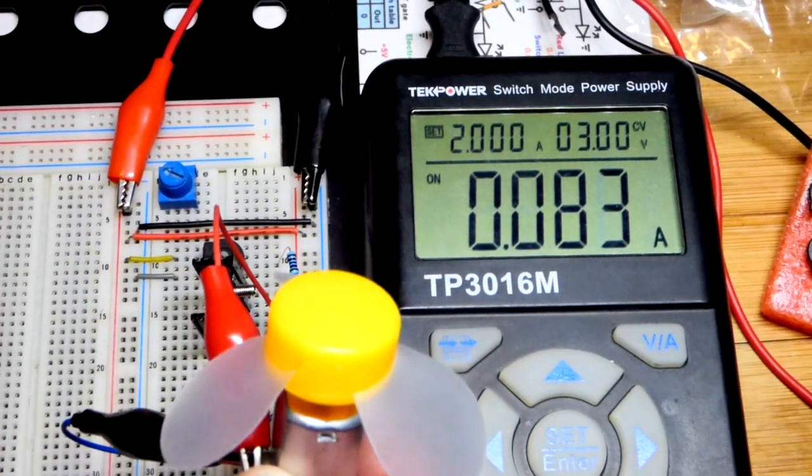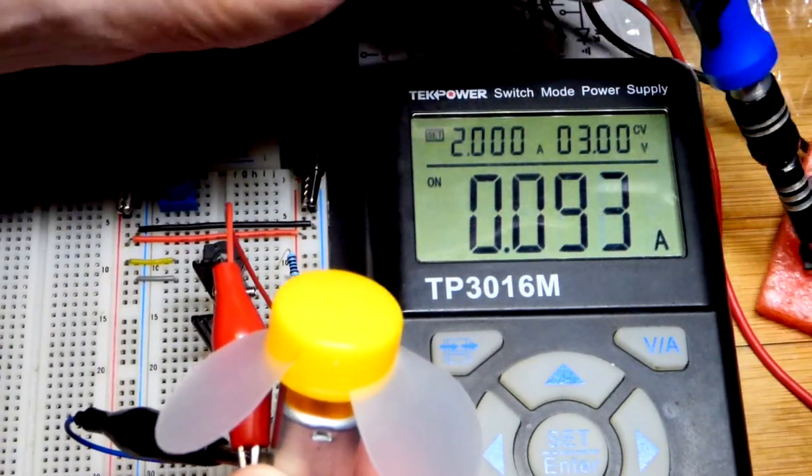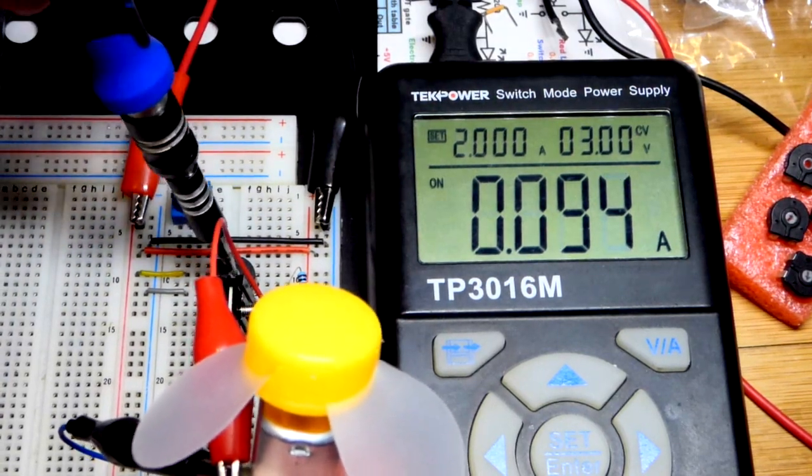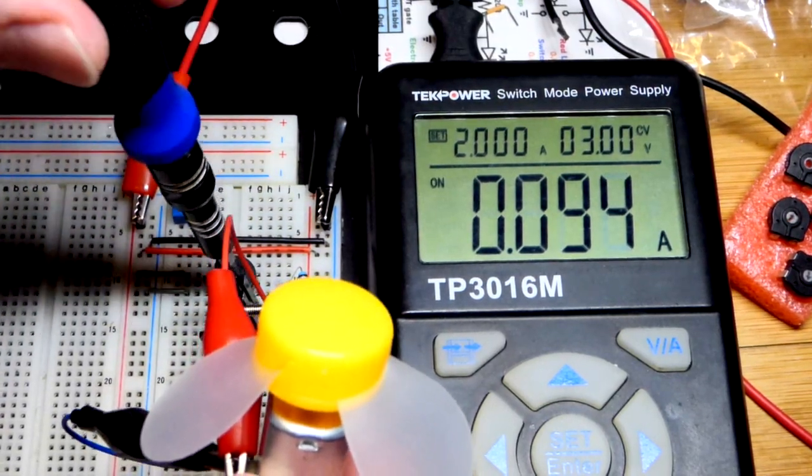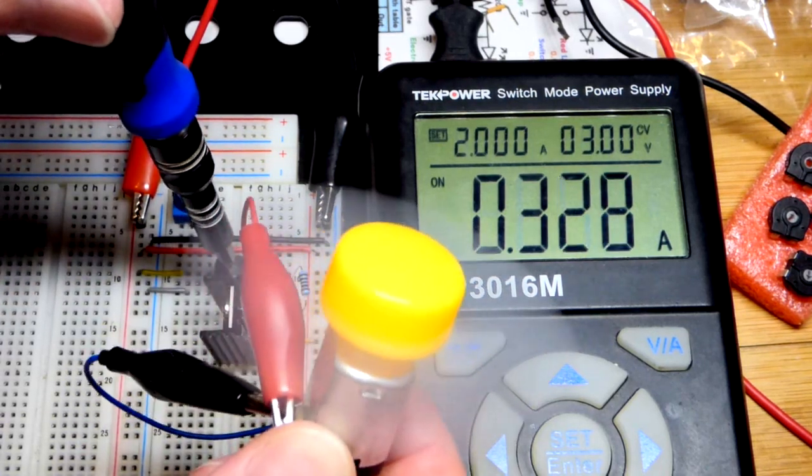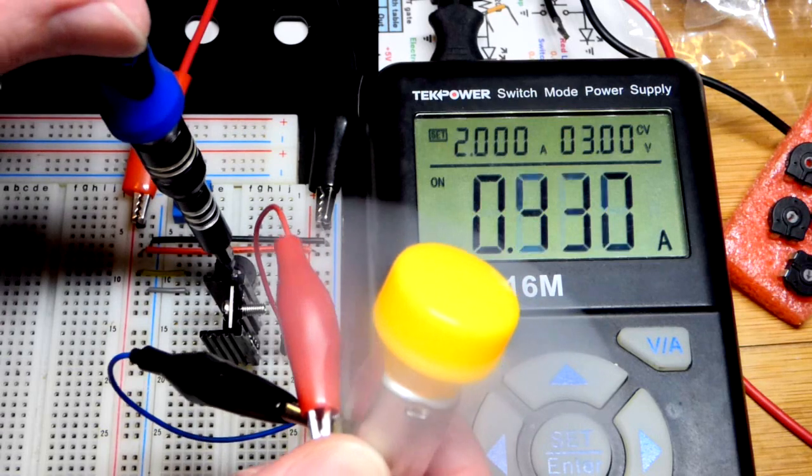Hopefully you can see that we're getting a lot more current. I grabbed the trim pot off of that foam there - that's why that's there. I got a number of different values there, 500 I think was the lowest. In any case, as I turn the trim pot towards the more positive side...